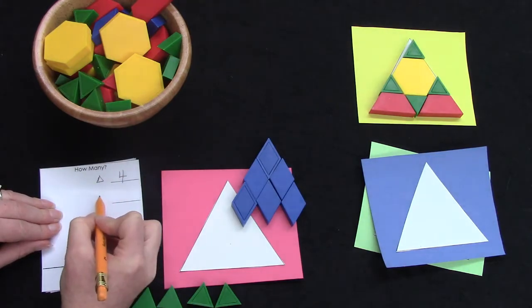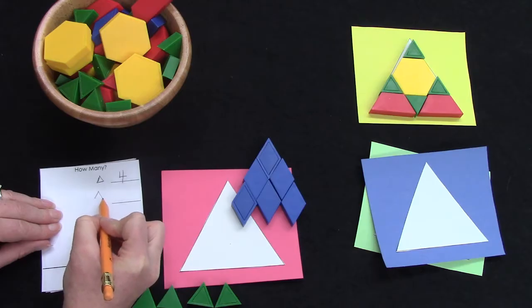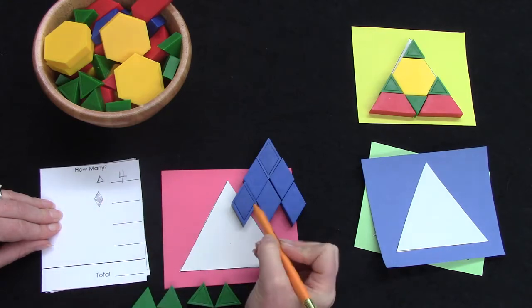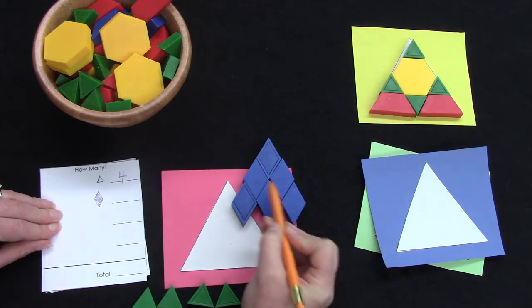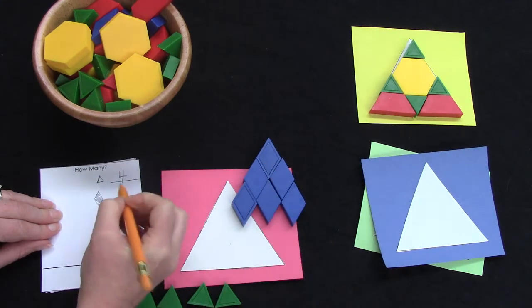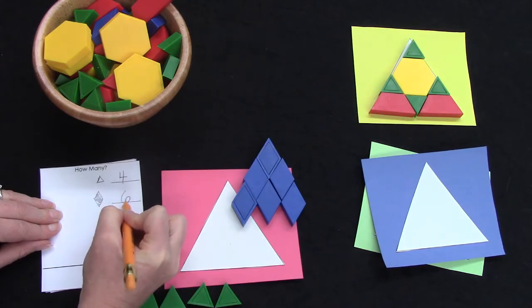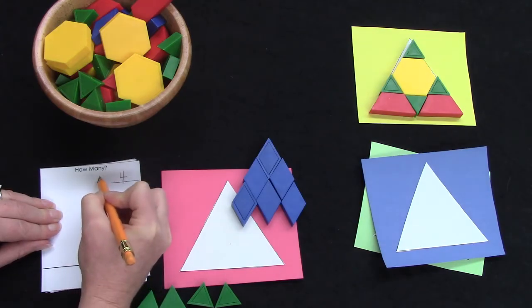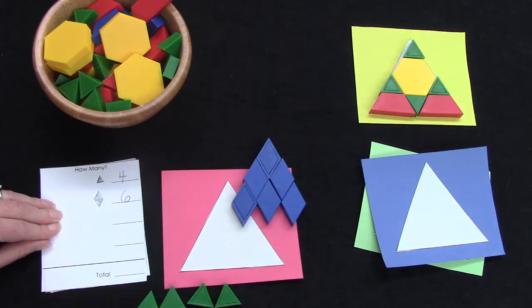Wow. How many rhombus did I use? Let's count them. One, two, three, four, five, six. I used six rhombus and I used four triangles.